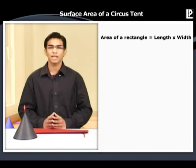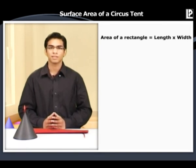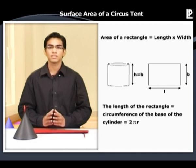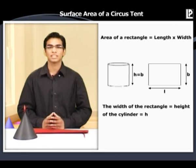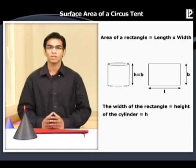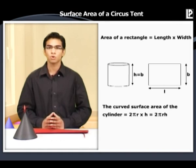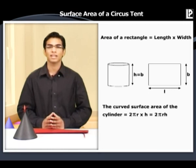We know that the area of a rectangle is length times width. The length of the rectangle is actually the circumference of the base of the cylinder, that is equal to 2πr. The width of the rectangle is actually the height of the cylinder, that is equal to h. So, the curved surface area of the cylinder is equal to 2πr times h, that is 2πrh.